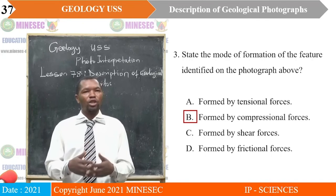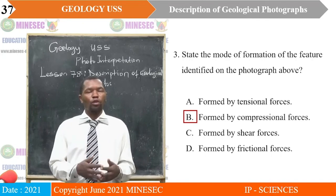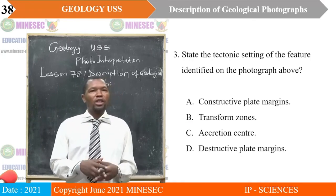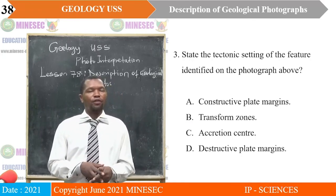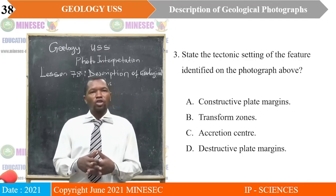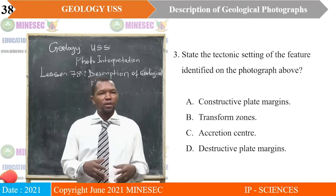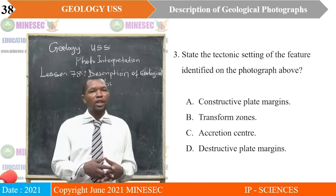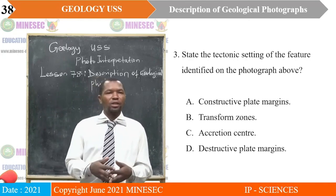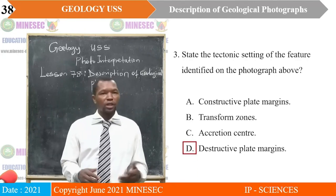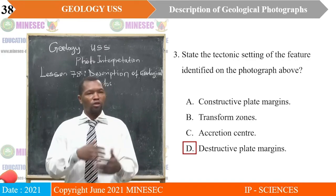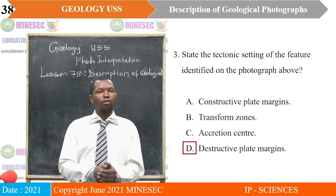Question three: state the tectonic setting of the feature identified on the photograph above. A. Constructive plate margin, B. Transform zones, C. A creation center, D. Destructive plate margins. The correct answer is D — destructive plate margins — because these are cases where plates are moving towards each other, most likely driven by compressional forces.